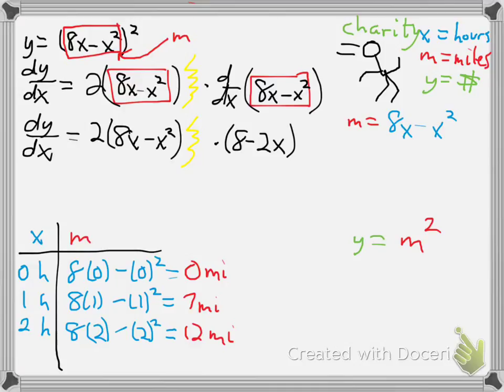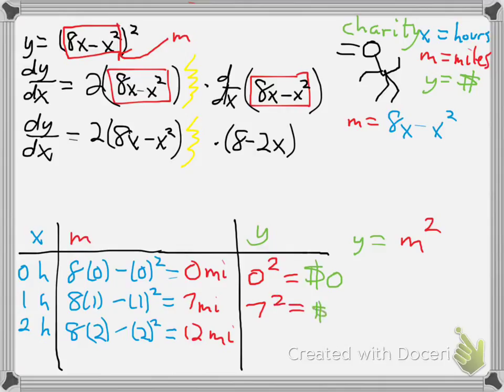This allows us to extend our table of values. y equals m squared, so at the beginning, we've gone zero miles. Zero squared gives us zero dollars. We haven't made any money yet, but we also haven't done any work yet. We go on, and after one hour, we've gone seven miles. The number of miles squared is then seven squared, which is $49. After two hours, we've gone 12 miles, so we'll take 12 squared and find that we've raised $144 for Habitat for Humanity at that point.